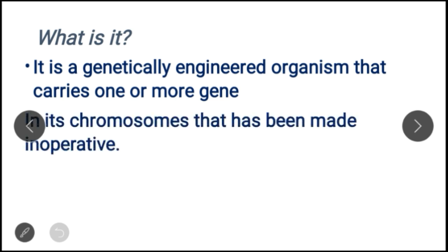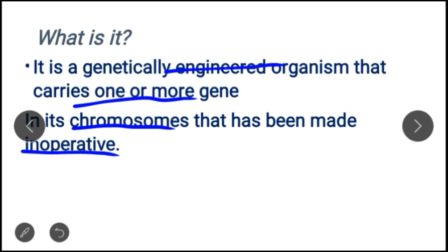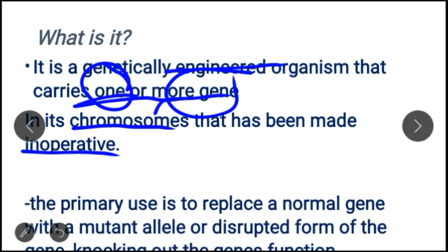A knockout organism is a genetically engineered organism that carries one or more genes in its chromosomes that have been made inoperative — non-functional. If one gene is knocked out it is called heterozygous, and if more than one gene is knocked out it is called homozygous knockout mice.